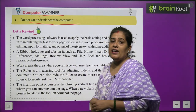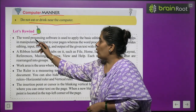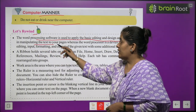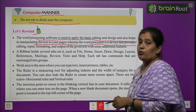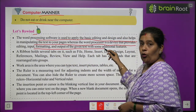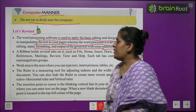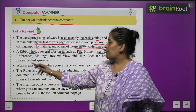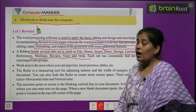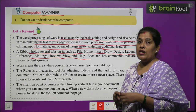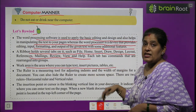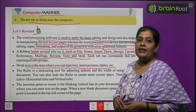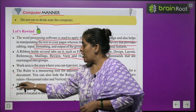Now let us rewind. The word processing software is used to apply basic editing and designing, and also helps in manipulating the text of your pages. A ribbon holds several tabs: File, Home, Insert, Drawing, Design, Layout, References, Mailing, Review, View and Help. The Work Area is the area where you can type text, insert pictures, tables, etc. The next two points you will read by yourself.